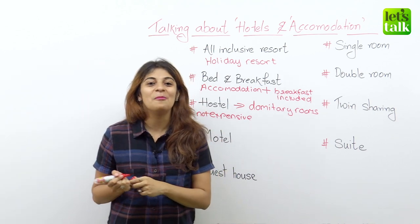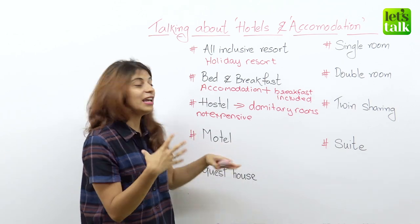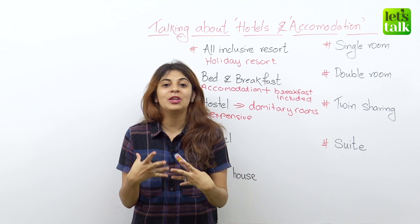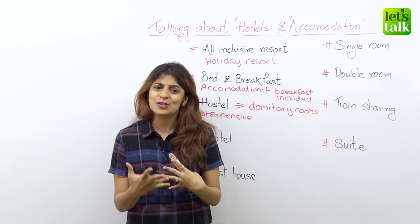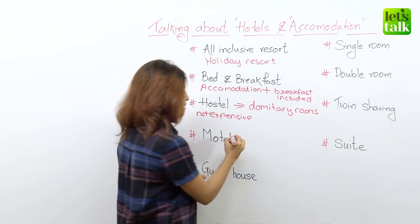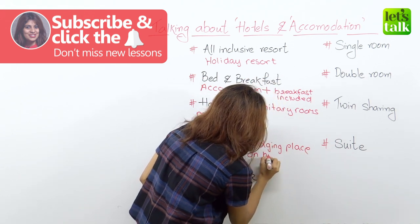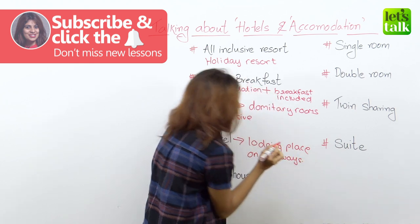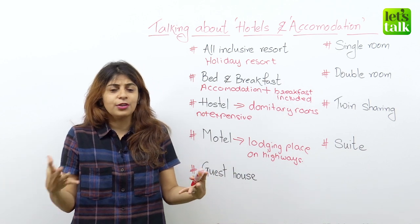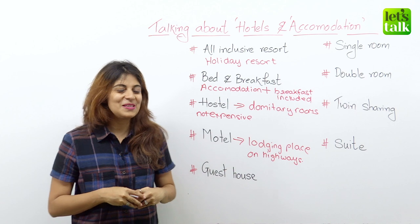The next type of hotel is a motel. A motel is a lodging place which has a series of rooms and usually a motel is located on very famous highways. So when you are travelling on a road trip and you are really tired and exhausted and you want to take a break, you would like to stay the night in a motel. Motels have basic rooms with basic amenities and they are located on highways. So that's a motel for you.